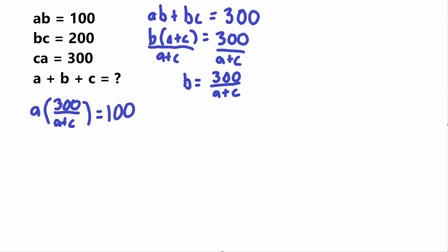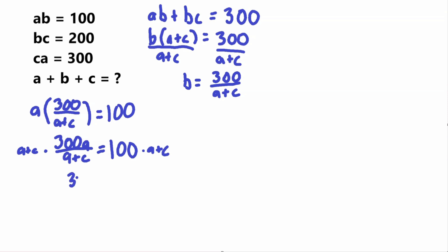Now I'm going to cross-multiply. So 300A equals 100 times (A plus C). Multiplying A plus C to get it out of the denominator, I'm going to get 300A is equal to 100 times (A plus C), and distributing 100 to both terms gives us 100A plus 100C.